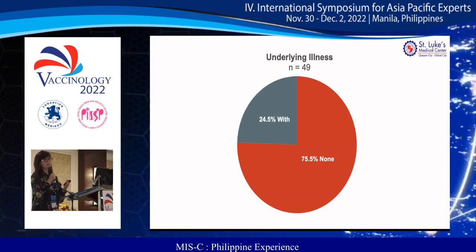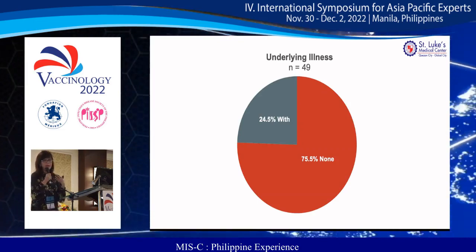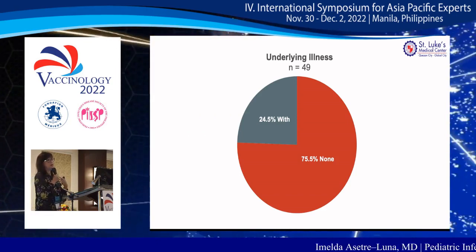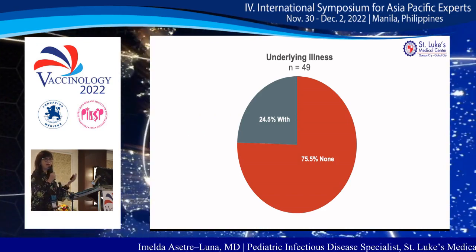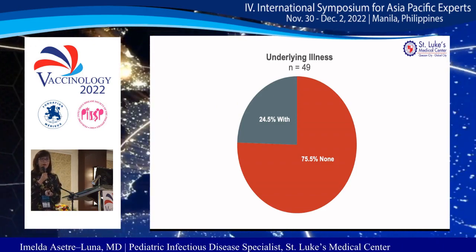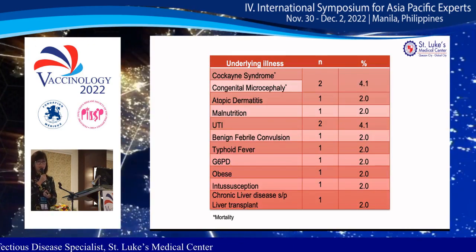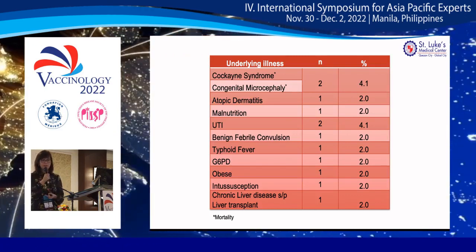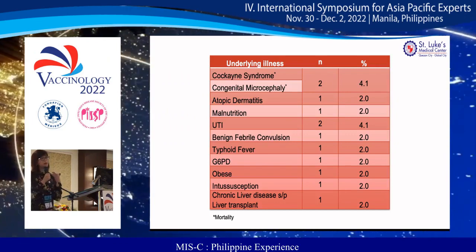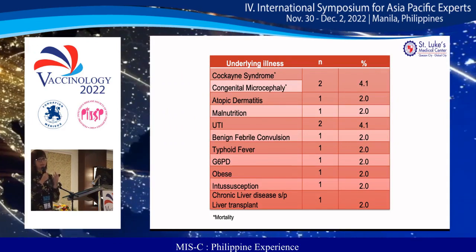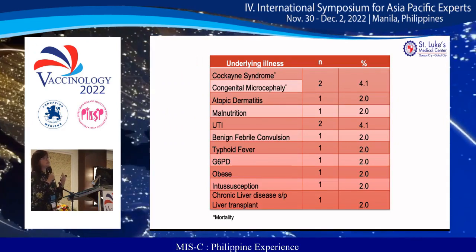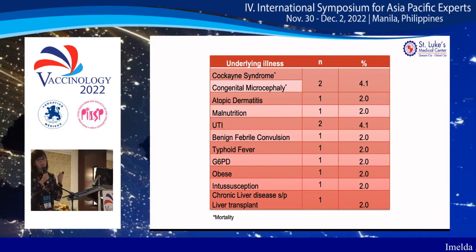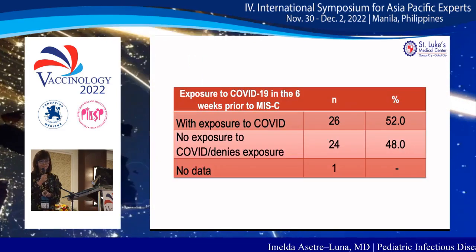Just like international data, the majority of our MIS-C cases had no underlying illness — these were previously healthy children. Only 24% had underlying illness. We had two mortalities, both with genetic abnormalities at birth: one with Cockayne syndrome and the second with congenital microcephaly.